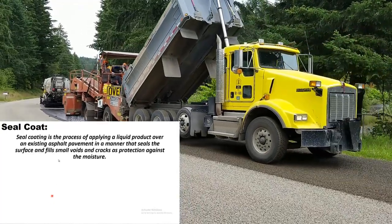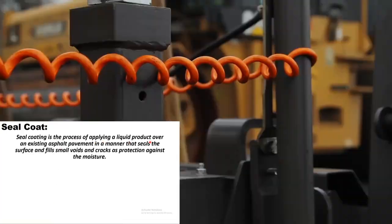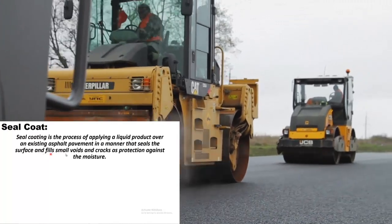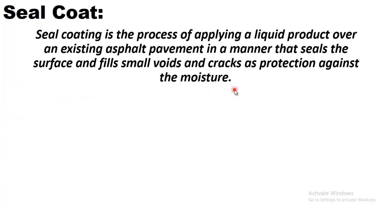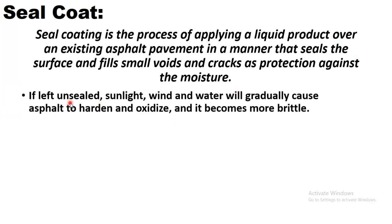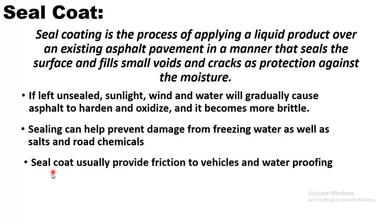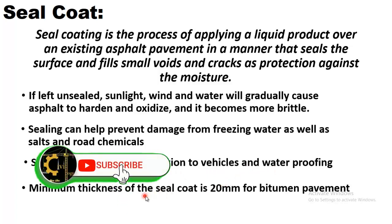The third one is seal coat. Seal coat is the process of applying a liquid product over an existing asphalt pavement in a manner that seals the surface and fills small voids and cracks as protection against moisture. If left unsealed, the sunlight, wind and water will gradually cause asphalt to harden and oxidize and it becomes more brittle. Sealing can help prevent damage from freezing water as well as salts and road chemicals. Seal coats usually provide friction to the vehicles and waterproofing. Minimum thickness of the seal coat is 20 mm for bitumen pavement.